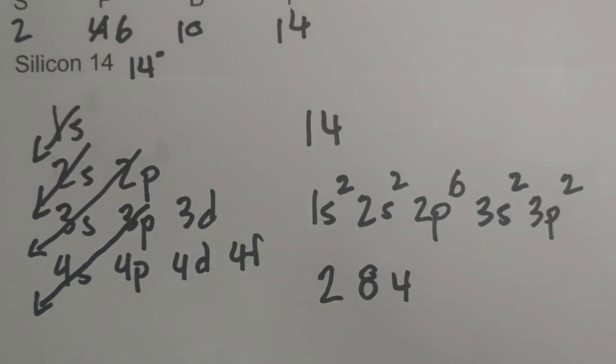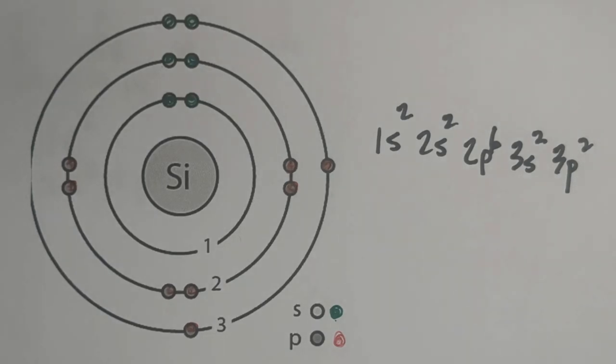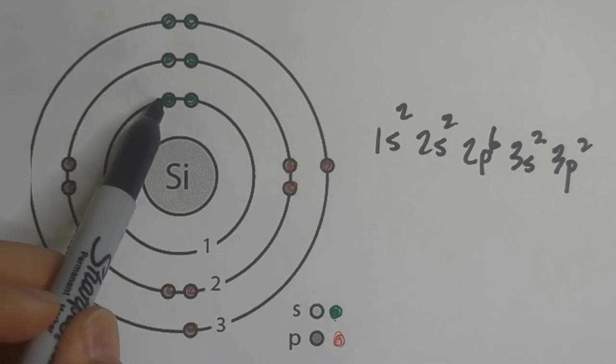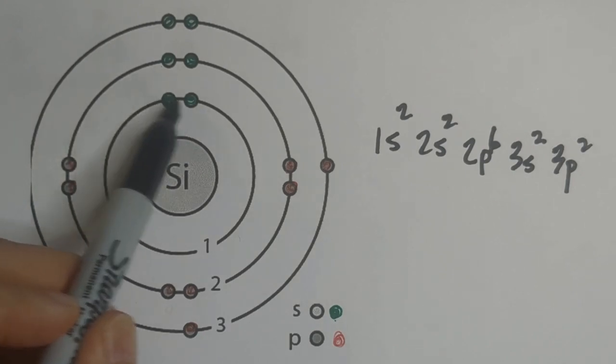And then let's take a look at the Bohr model. Here's the Bohr's model, the s's are going to be green. So we have 1s².